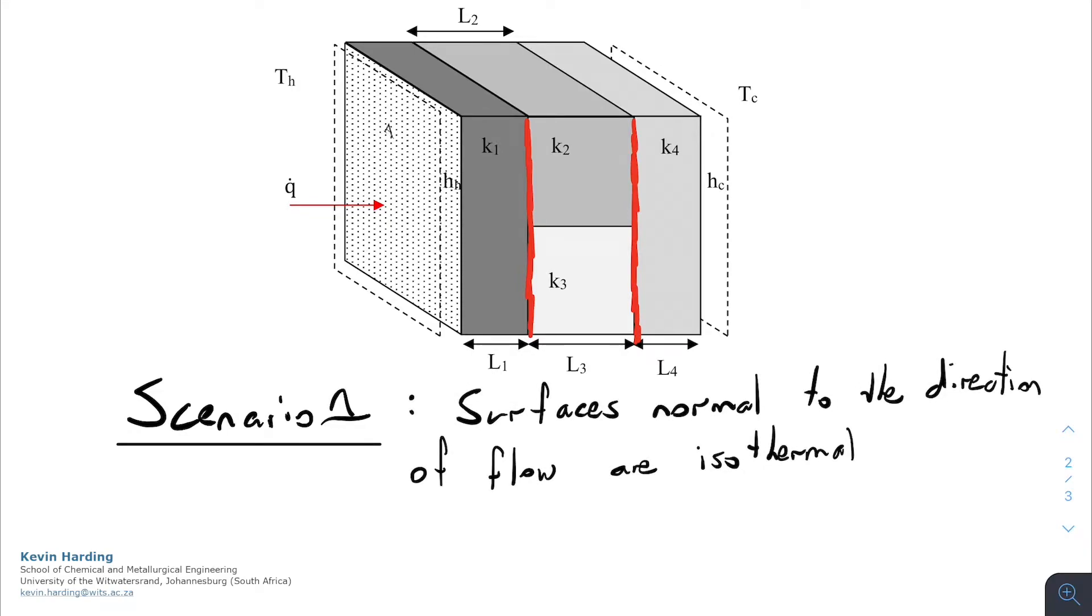So what this means is if the surface is normal to the direction of flow is isothermal as drawn in red, the temperature throughout the length of one and throughout the length of four are going to be constant.